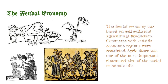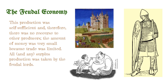The feudal economy was based on self-sufficient agricultural production. Commerce with outside economic regions was restricted. Agriculture was one of the most important characteristics of social-economic life. This production was self-sufficient, and therefore there was no recourse to other producers. The amount of money was very small because trade was limited. All and any surplus production was taken by the feudal lords.